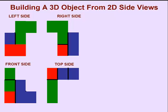Let's start with our dimensions again. We can tell from the front, left, and right side our object is three blocks high. We know that the bottom middle block must be a red block, and then on top of that,